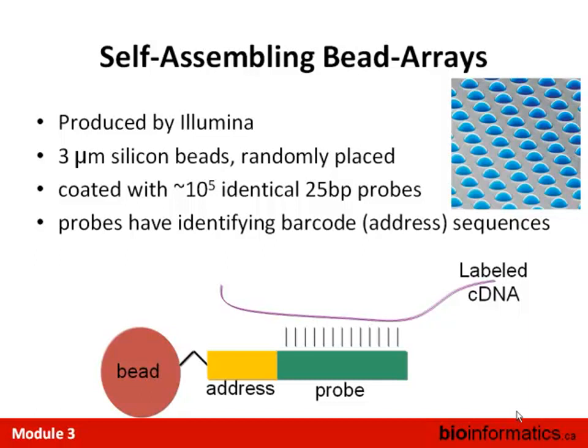Can anybody see the experimental design issues when analyzing this kind of data? One is the address mapping, which could have errors. Another is the closeness of beads — if there are any errors in ordering, you have a big problem. And it's a 25-base pair probe replicating the same part many times, so you're getting an assessment of technical variability rather than biological variability.